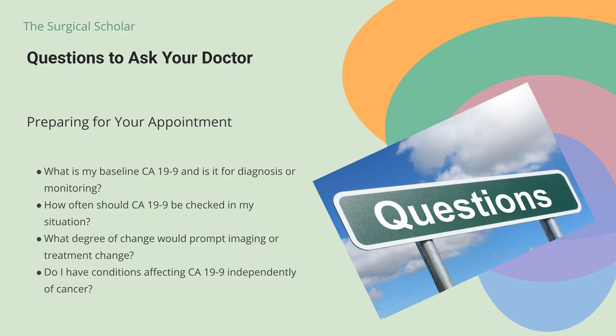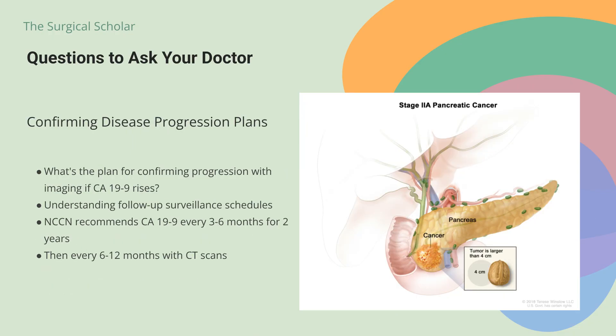Before your appointment, prepare these questions: What is my baseline CA-19-9 level, and is it being used for diagnosis or monitoring? How often should my CA-19-9 be checked given my specific situation? What degree of change would prompt you to order imaging or change my treatment? Do I have conditions like bile duct obstruction or pancreatitis that could be affecting my CA-19-9 independently of cancer? If my CA-19-9 is rising, what's the plan for confirming disease progression with imaging?